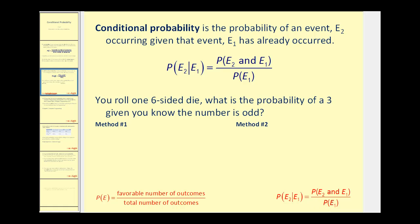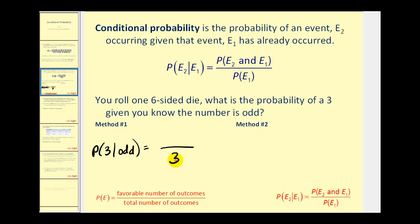Here's the problem: if you roll one six-sided die, what is the probability of a three given you know the number is odd? If we know that the number is already odd, that reduces the total number of outcomes. There are three numbers from one to six that are odd: one, three, and five. So there's only one odd number that is three, and the probability would be one-third.